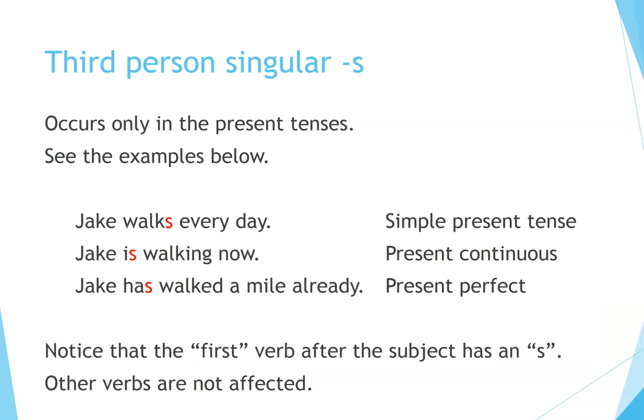Third person singular S occurs only in the present tenses. For example: Jake walks every day — simple present tense. Jake is walking now — present continuous. Jake has walked a mile already — present perfect. Notice that the first verb after the subject has an S; other verbs are not affected.